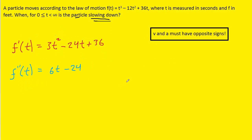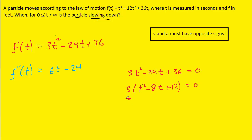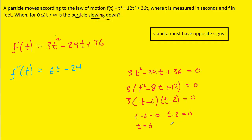To figure out the intervals on which v and a have opposite signs, we need to do a number line analysis. Starting with the velocity function, we figure out where the velocity equals 0 — meaning the particle would momentarily be stopped. We set the velocity equation equal to 0. We can factor out a 3 to get t squared minus 8t plus 12, which factors into (t minus 6)(t minus 2) equals 0. Setting each factor equal to 0, we find two times when the particle is stopped: t equals 6 and t equals 2. Let's plot those on a number line.